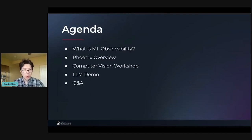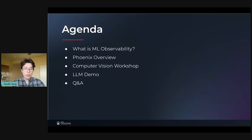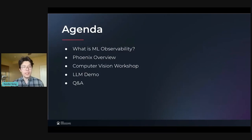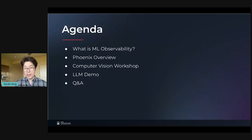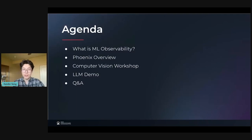I'm going to send you a Colab link. We're going to download some data from an image classification model and we're going to try to identify the root cause of a production drift issue. We're going to spend most of our time doing this interactive demo. But near the end, I'm going to spend a couple of minutes and show you a sneak peek of what we've got coming down the line for our support for large language models. And at the very end, if we have time, I'll reserve a minute or two for questions and answers.